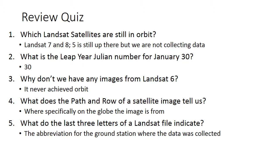And here are the answers. Landsat 7 and 8 are up and currently transmitting information. Landsat 5 is still up there but we're not collecting data from it. The Julian number for January 30 would still be 30 because we haven't gotten past February 28. Landsat 6 never achieved orbit, so we don't have any images from it. The path and row show specifically where on the globe the image is from. And the last three letters indicate the abbreviation for the ground station where the data was collected.